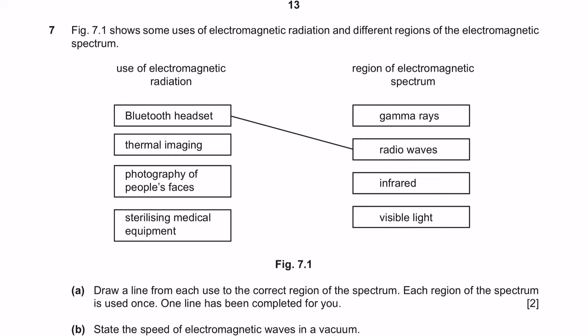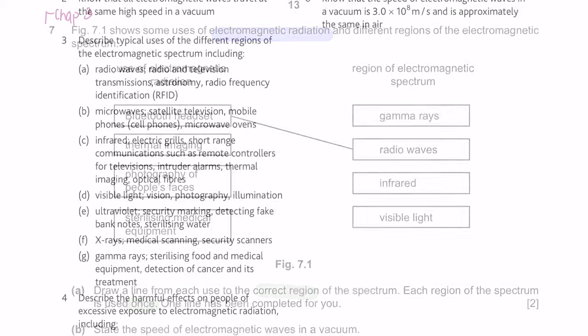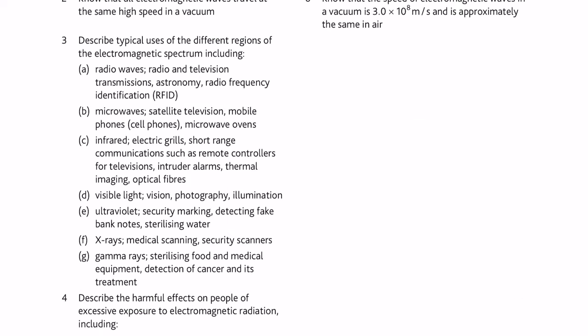Question 7. Figure 7.1 shows some uses of electromagnetic radiation and different regions of the electromagnetic spectrum. This is a question from Chapter 3. Question A. Draw a line from each use to the correct region of the spectrum. Each region of the spectrum is used once. One line has been completed for you. So it shows here that the Bluetooth headset is in the region of radio waves. As mentioned in the previous video, your core specification of the subject is extremely handy. We're going to use the notes provided in the specifications to answer this question.